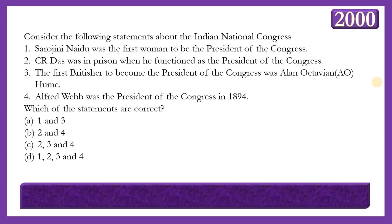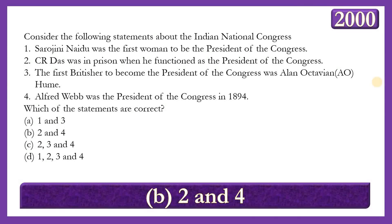Consider the following statements about the Indian National Congress: (1) Sarojini Naidu was the first woman to be president of the Congress. (2) C.R. Das was in prison when he functioned as president of the Congress. (3) The first jurist to become president of the Congress was A.O. Hume. (4) Alfred Webb was the president of the Congress in 1894. The correct answer is option B — statements 2 and 4 — because Sarojini Naidu was the second woman president, not the first (the first was Annie Besant), and A.O. Hume was the founder of Congress but never became its president.